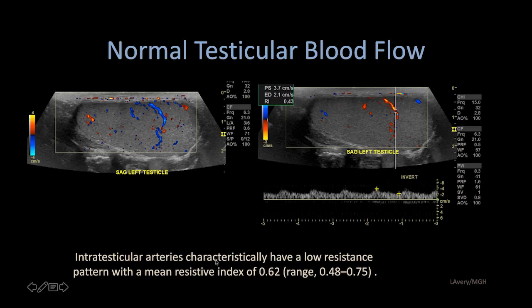The normal resistive indices range from 0.4 to 0.7, and about 0.6 is considered normal.